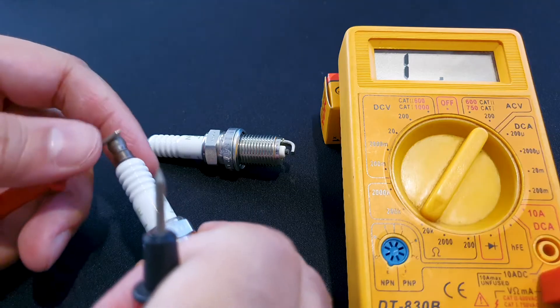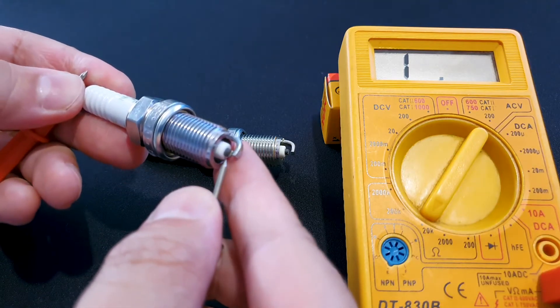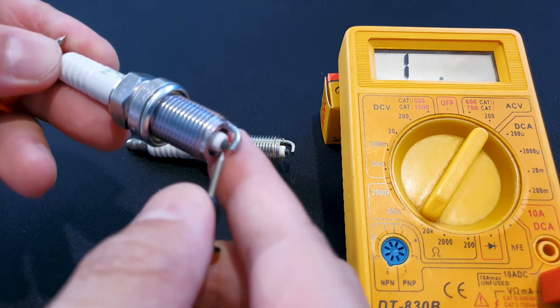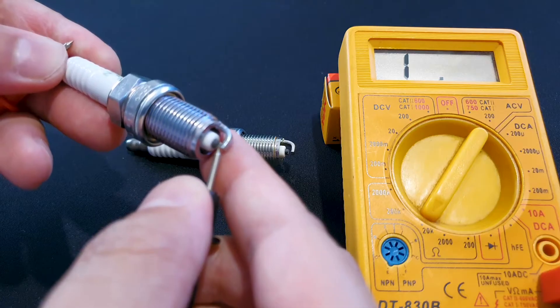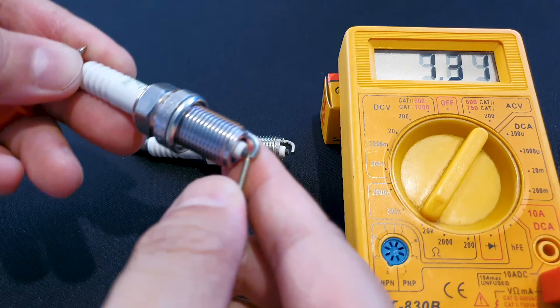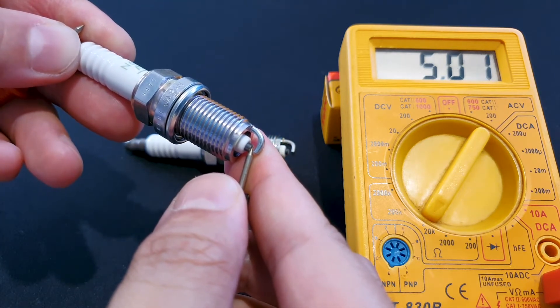I'm going to put one end of the probe over here and the other one on the electrode. It doesn't work if I put it on the side because I believe there's some coating on it, so I'm going to put it in the center. But be careful, this is a new spark plug, so don't want to damage this. Let's see what we get.